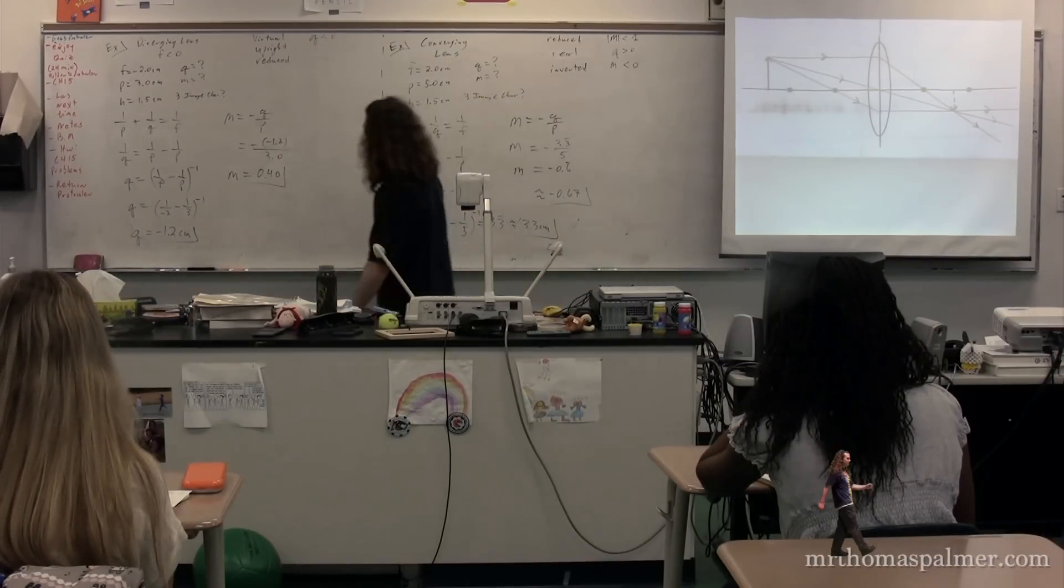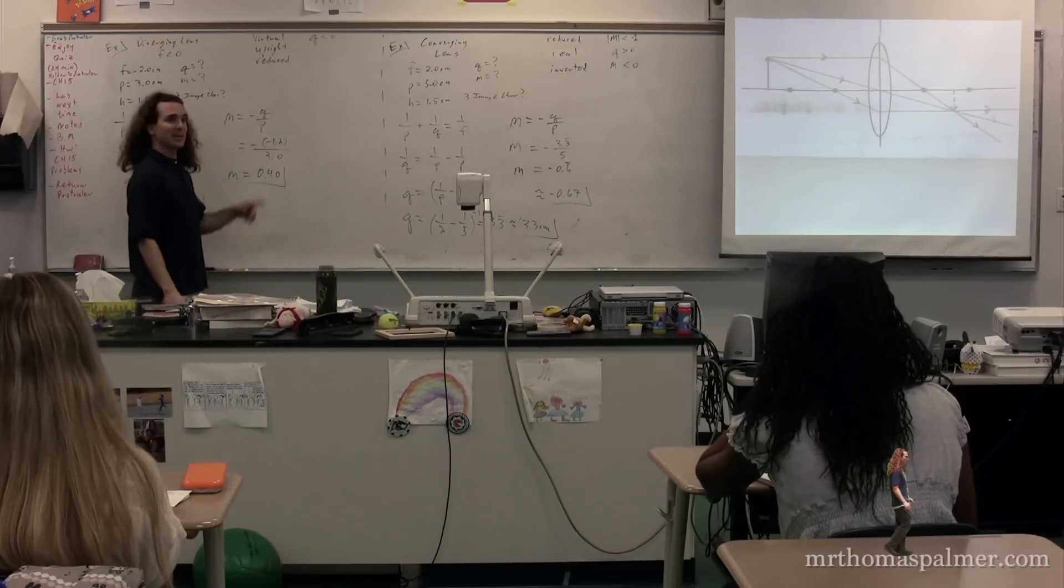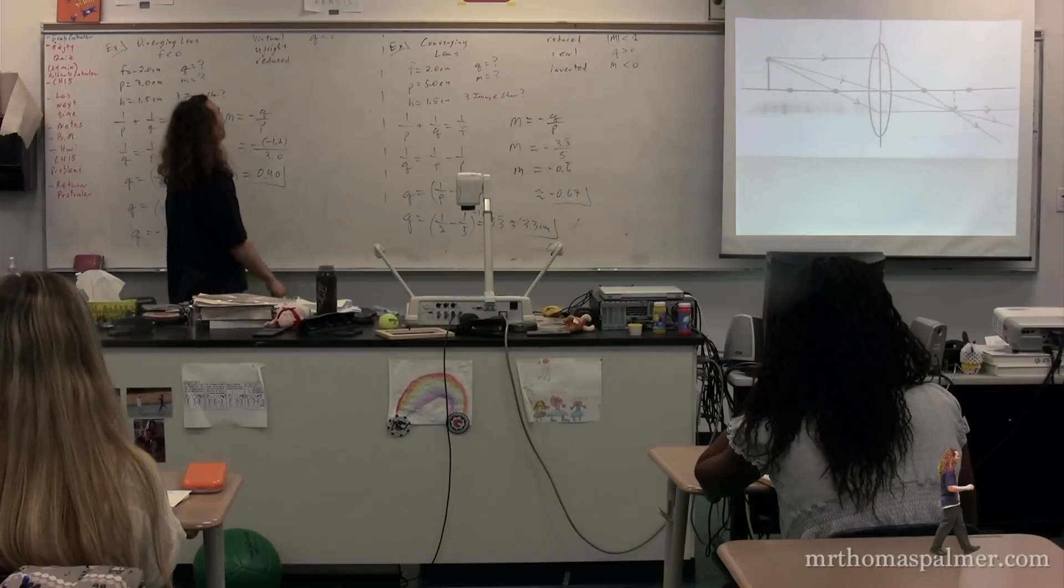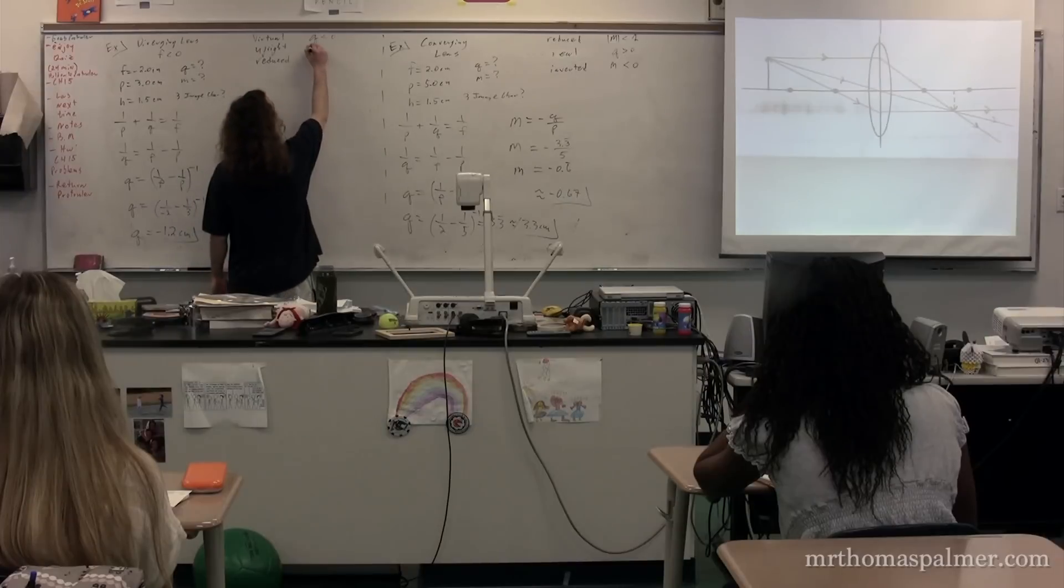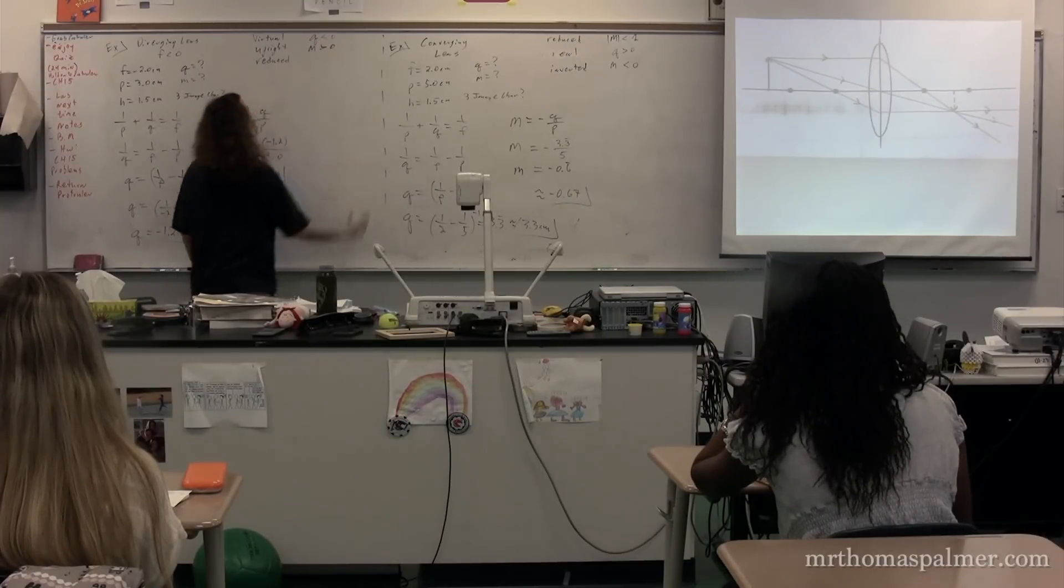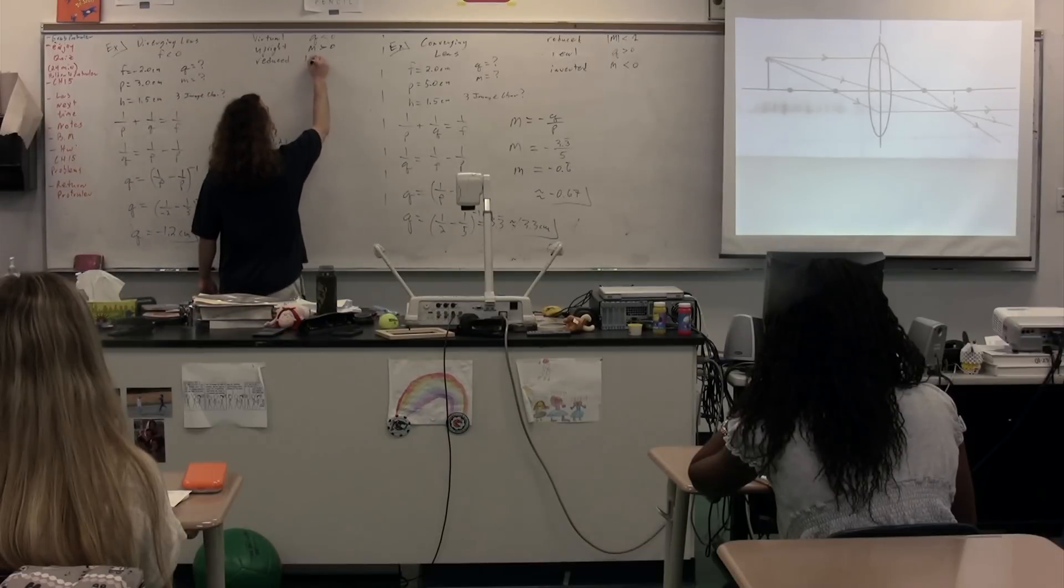This confirms two other image characteristics. Mahesh, what are? Magnification. I agree. We've got the magnification, but that confirms two of our image characteristics. No. It is upright. Because? Because the magnification is greater than zero. And it is reduced because? The absolute value of the magnification is less than one. Great.